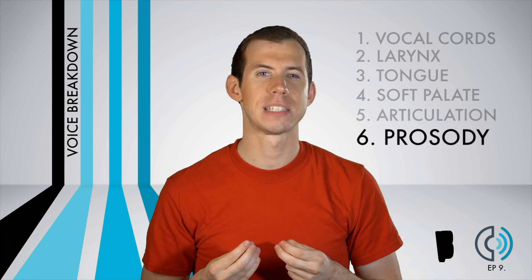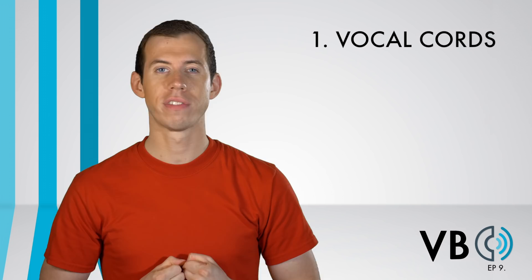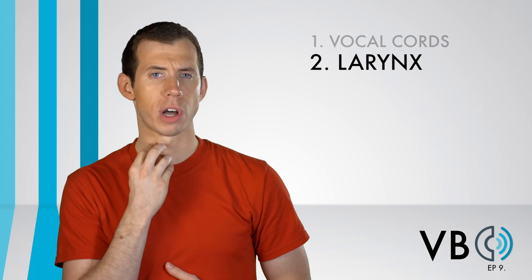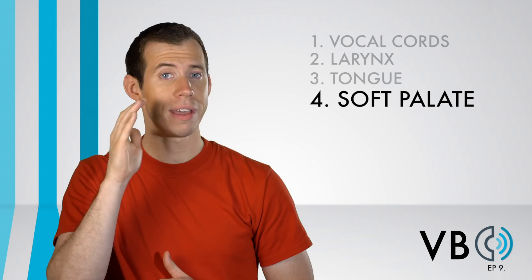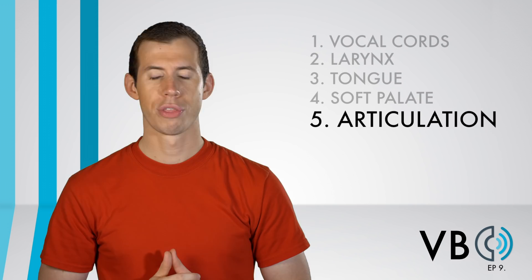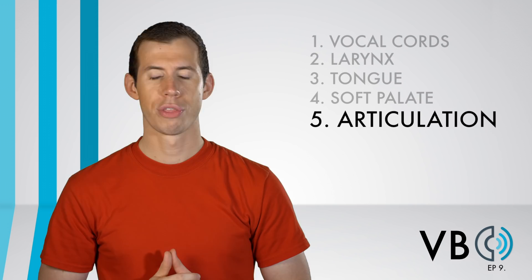Let's recap. Component number one, the vocal chords: raise our pitch and make it as grating and shrill as possible with all of the various types of distortions. Component number two, the larynx: raise the larynx to get the brightest and most strained sound possible. Component number three, the tongue: raise the tongue slightly — otherwise don't worry too much about this component. Component number four, the soft palate: lower it a bit to allow for some nasal resonance. Component number five, articulation: throw on your most exaggerated Brooklyn accent and over-articulate your sounds. Component number six, prosody: shout all of the time and only lower the pitch so that you can raise it back up high again.